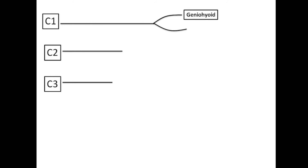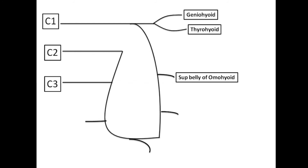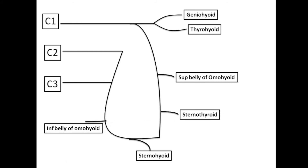There is the descens hypoglossi from C1 and the descens cervicalis from C2 and C3, which combine, and this loop in a curved form is called the ansa cervicalis. This ansa cervicalis supplies four muscles: the superior belly of omohyoid, sternothyroid, sternohyoid, and the inferior belly of omohyoid. These are the infrahyoid muscles.